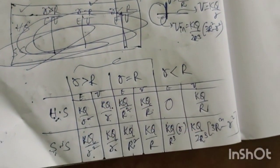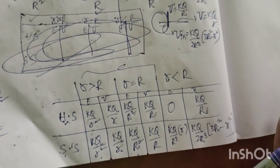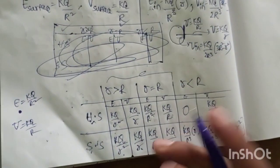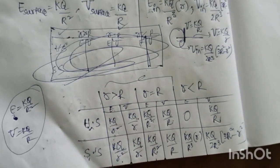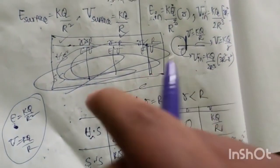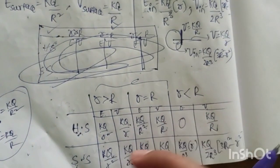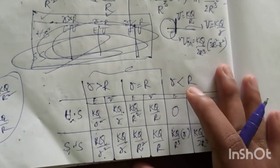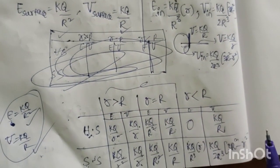If you have a hollow sphere or a solid sphere question, we use the same cases we discussed. There is a basic formula for point charge. In a hollow sphere for r greater than R, you can use those formulas. In two days, we will discuss these formulas in more detail.